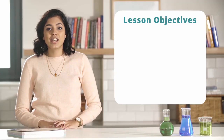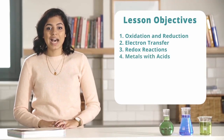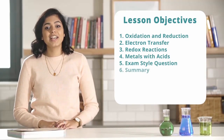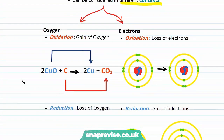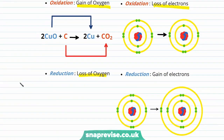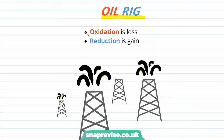In today's video we're going to take a look at oxidation and reduction, electron transfer, redox reactions, the reactions of metals with acids, an exam style question, and finally a summary. We'll begin with a reminder of what oxidation and reduction are. Oxidation in terms of electrons is the loss of electrons and reduction is the gain of electrons, summarized in the acronym OIL RIG: Oxidation Is Loss, Reduction Is Gain.